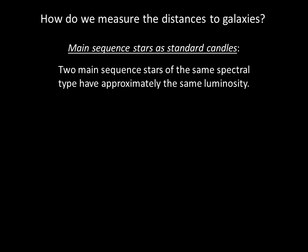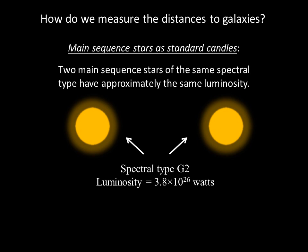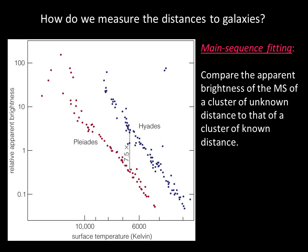A main sequence star is one example of a standard candle. Consider our sun — any star that is also a main sequence star with the same spectral type, G2, should have about the same luminosity as the sun. We can measure the star's apparent brightness and then use the inverse square law to calculate its distance. Because we can infer the luminosity of a main sequence star of a particular temperature, we can use a technique called main sequence fitting to measure the distance to star clusters that are too far to measure with parallax.